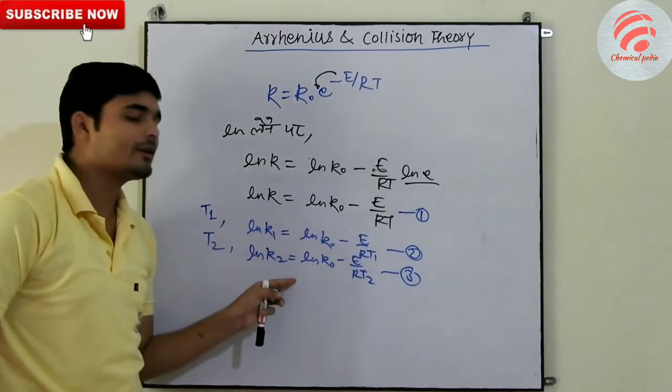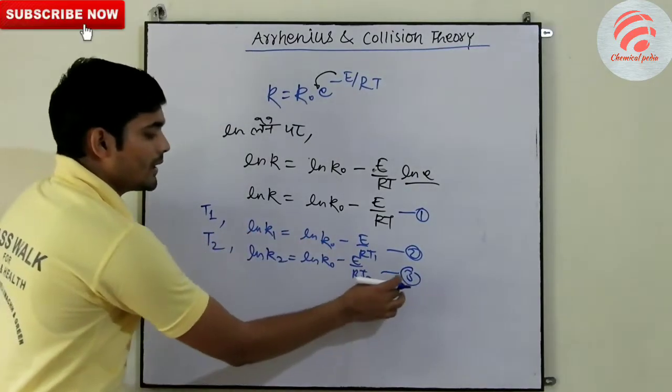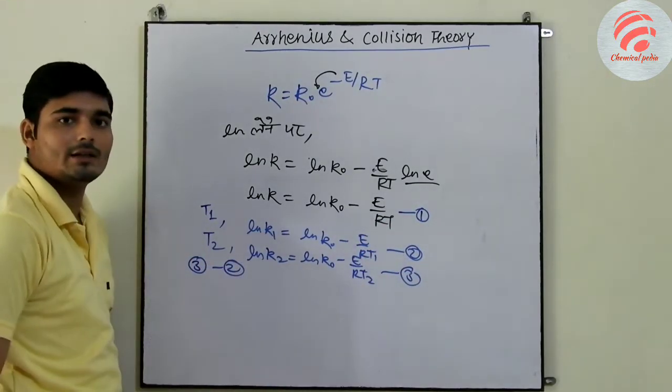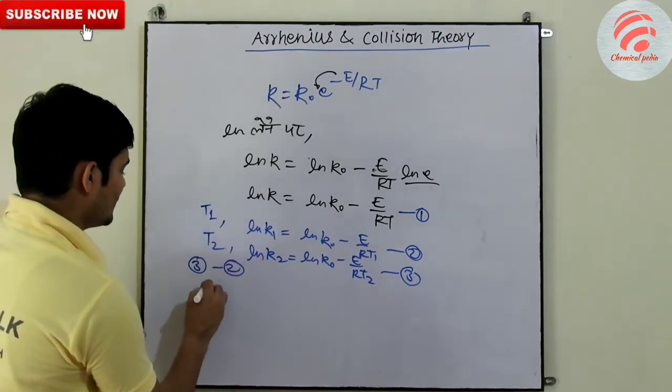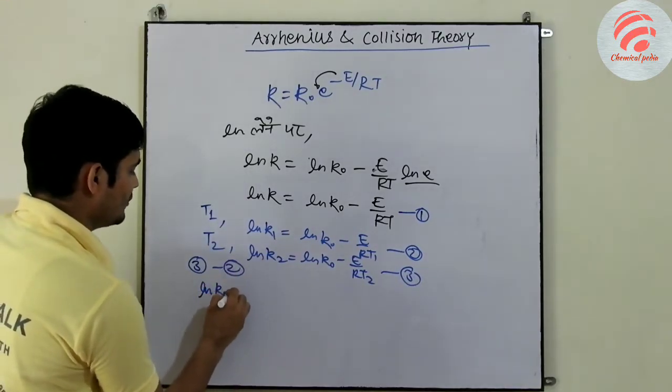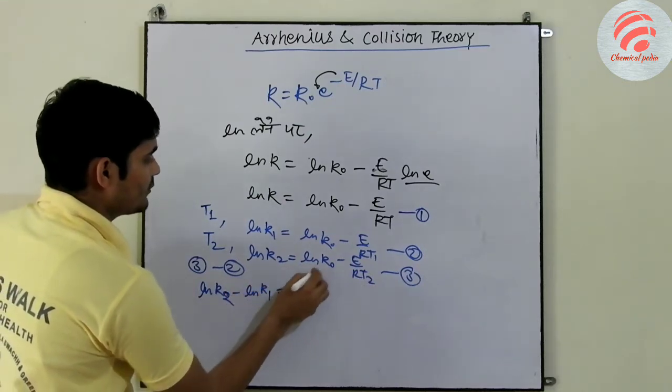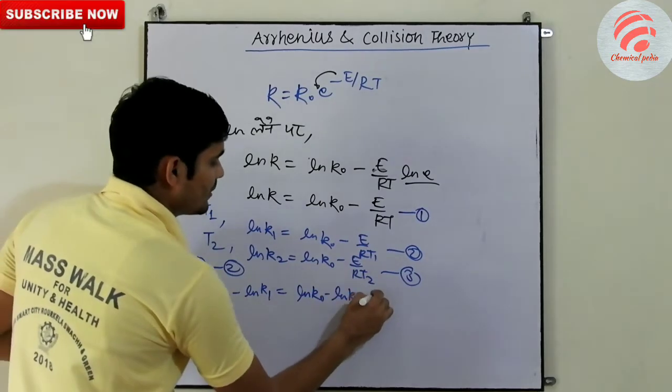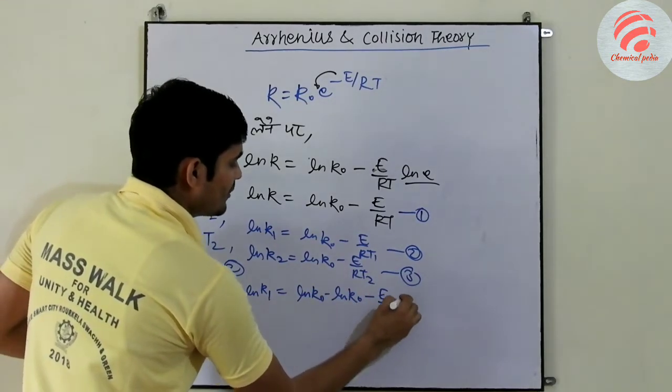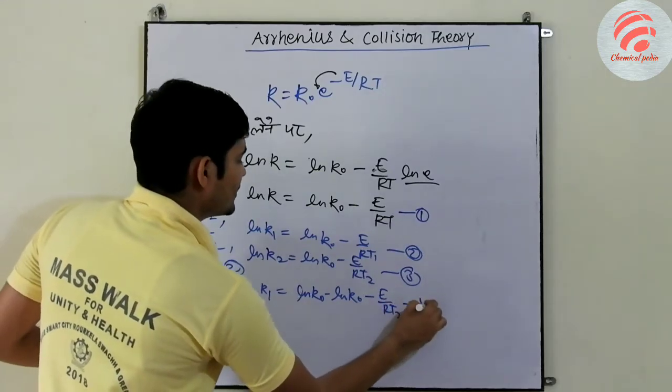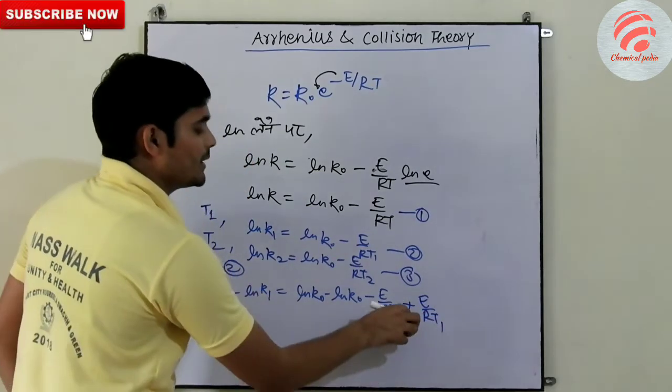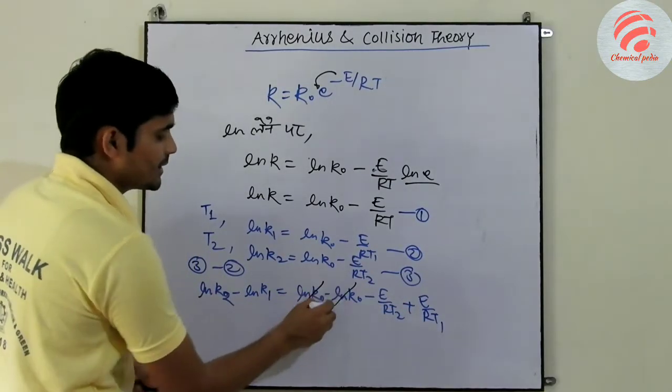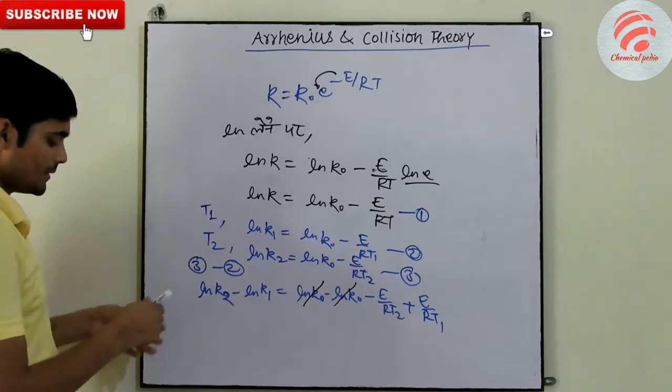Now, with these two equations, we will do derivation. We will do equation 3 minus 2. This will be ln k2 minus ln k1 equal to ln k naught minus ln k naught minus E upon RT2 plus E upon RT1 because we have negative so minus minus plus. This term and this term are the same, this is why we cut it.